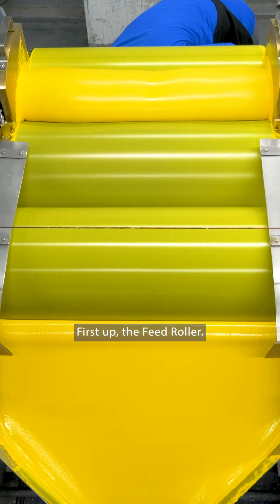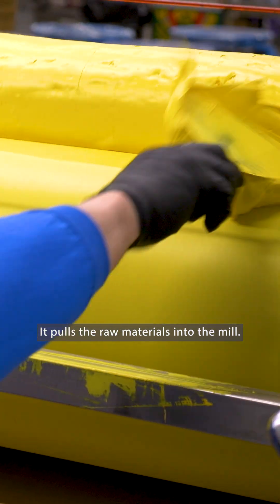How? First up is the feed roller. It pulls the raw materials into the mill.